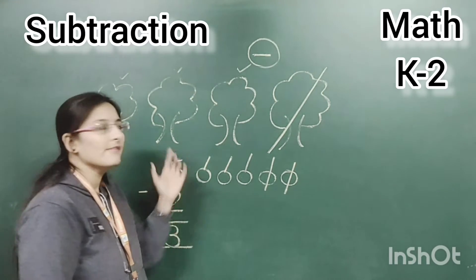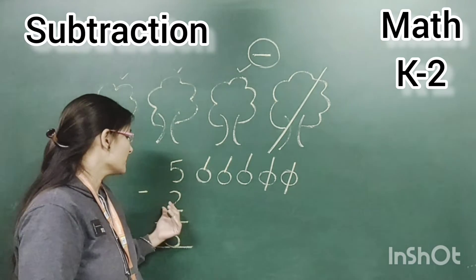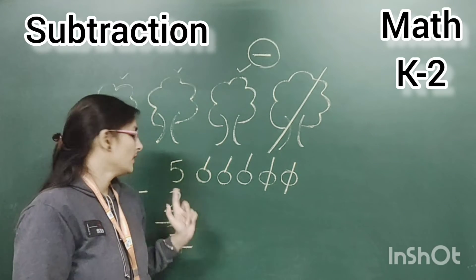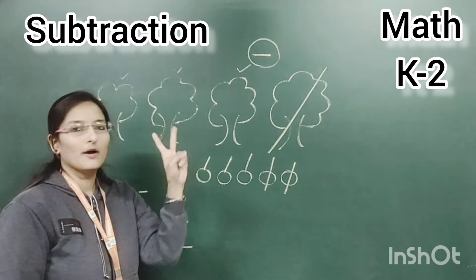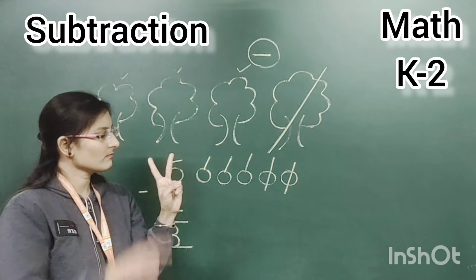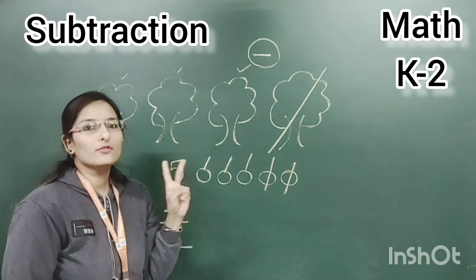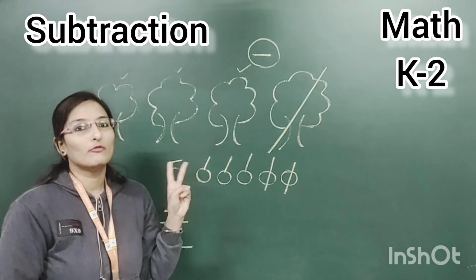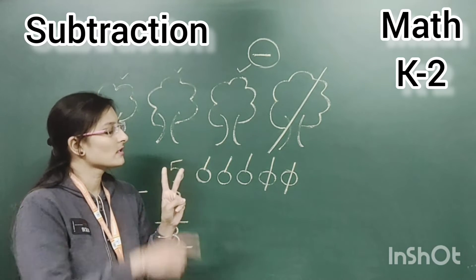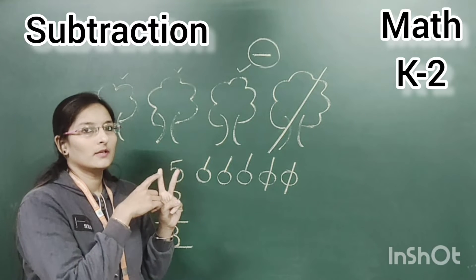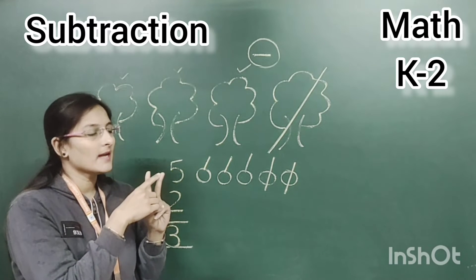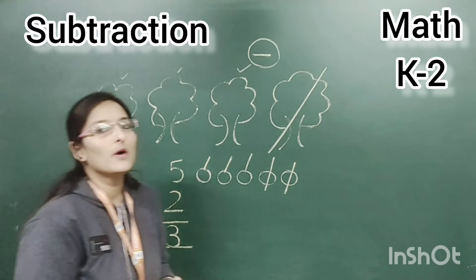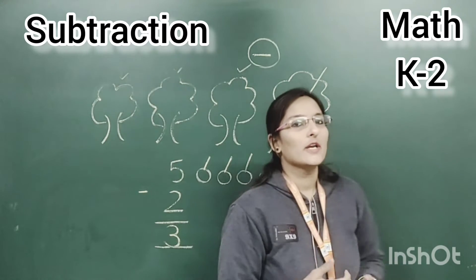Next method: keep the bigger number five in mind, and show the smaller number two on your fingers. Then count backwards before five: four, three. So what will be the answer? Three. It is three — correct from all methods. You can check the answer yourself.